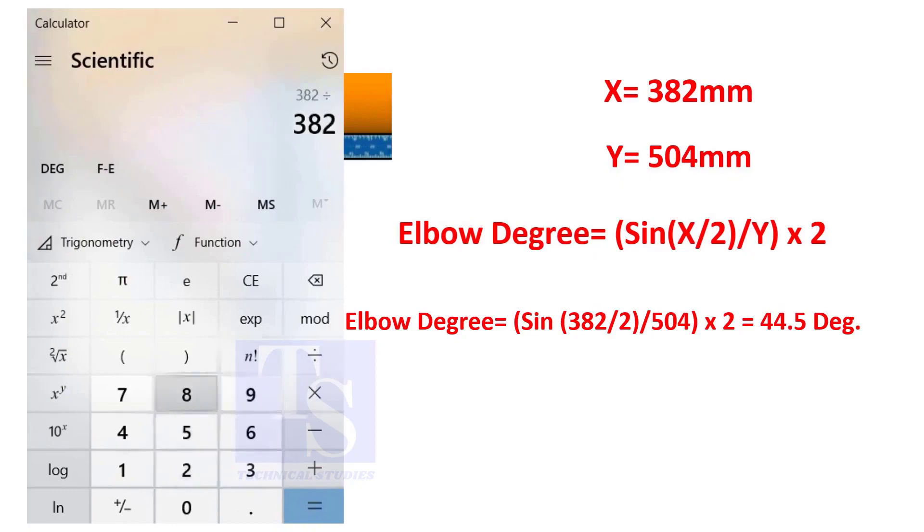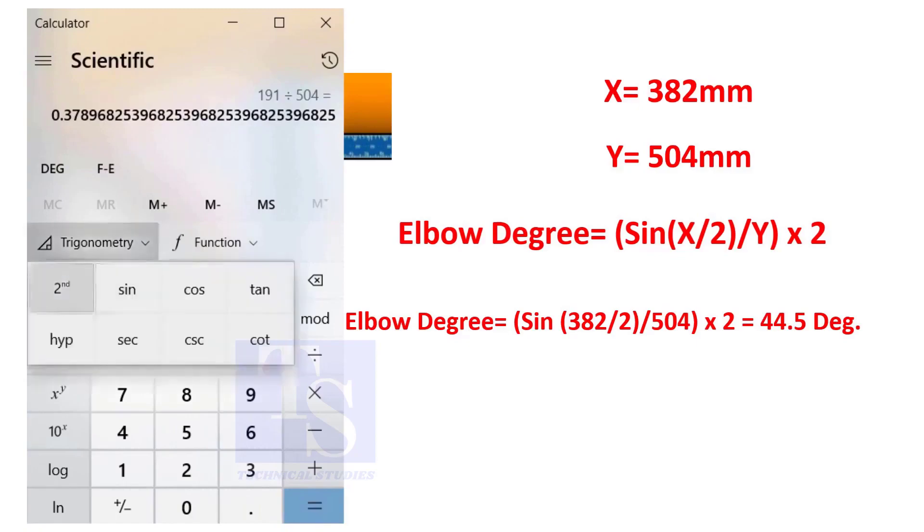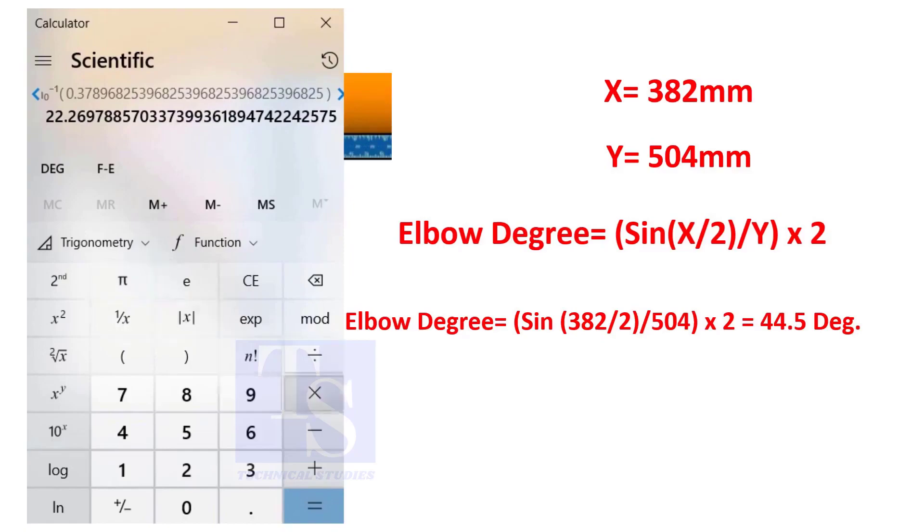You can try this method on pipe spools to measure the distortion due to welding. So, the degree of the elbow is 44.5.